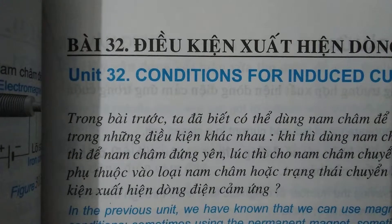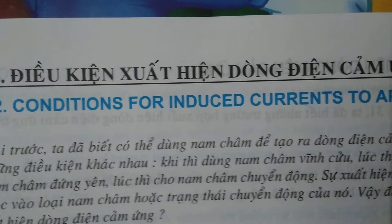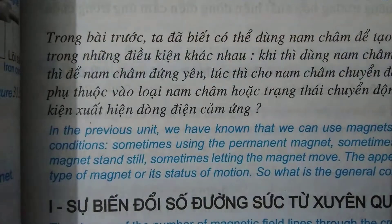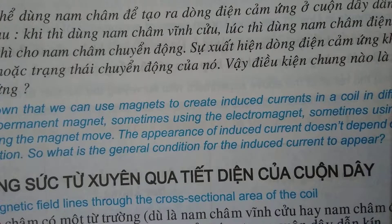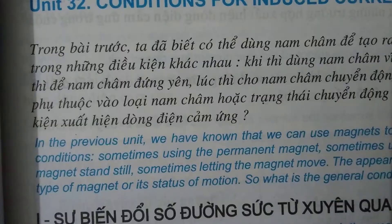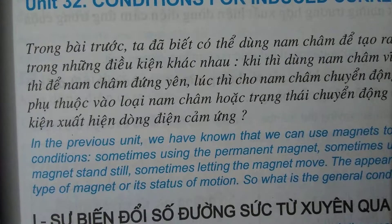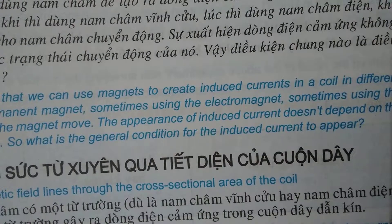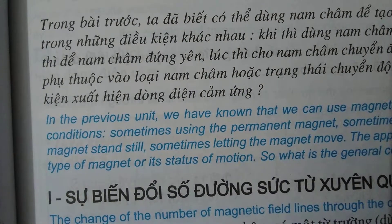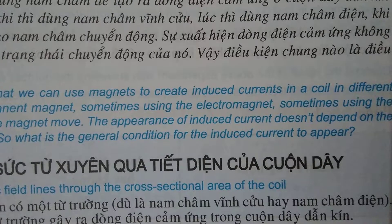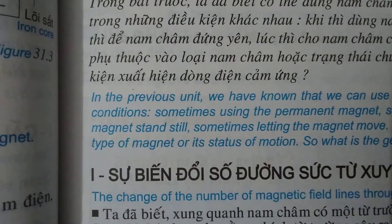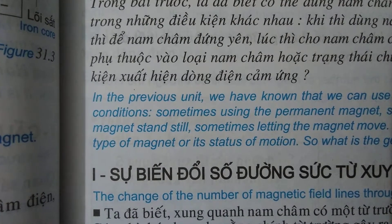Unit 32: Conditions for induced currents to appear. In the previous unit we learned that we can use a magnet to create induced currents in a coil under different conditions — sometimes using a permanent magnet, sometimes an electromagnet, sometimes with the magnet still, sometimes letting it move. The appearance of induced current doesn't depend on the type of magnet or its state of motion.